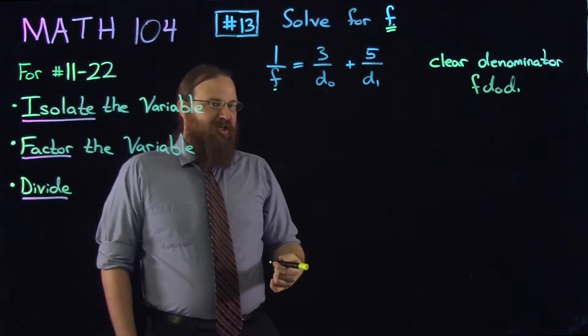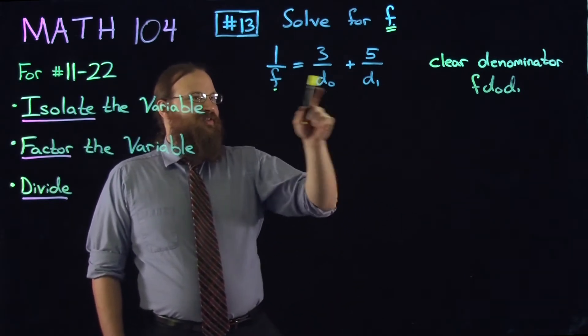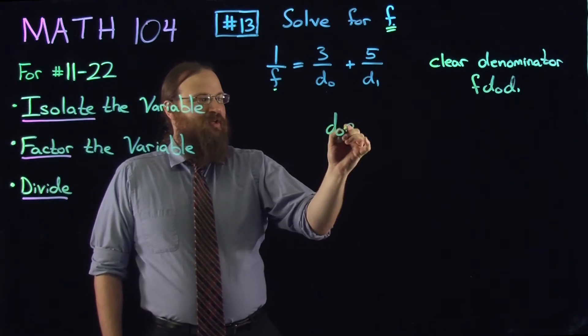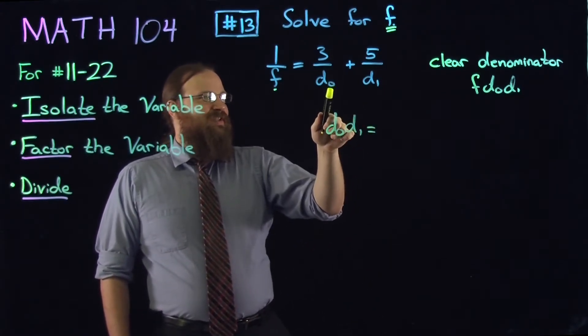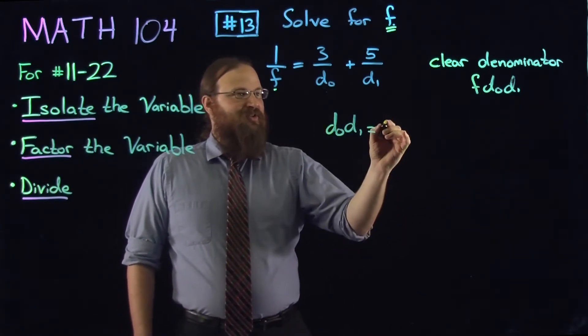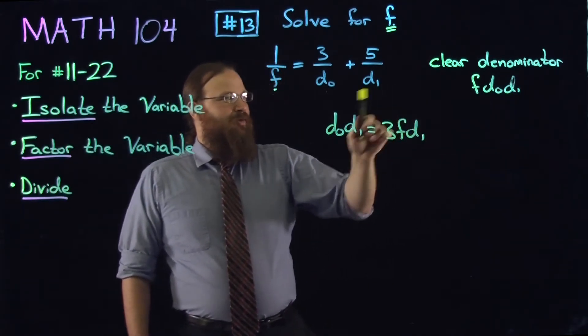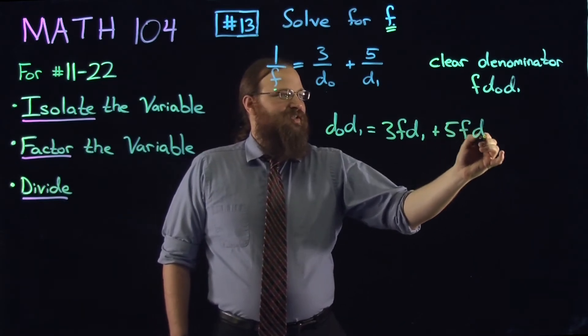And what we'll do is we'll multiply through the entire equation by this expression. So, f times 1 over f, that's going to cancel out, leaving us on the left-hand side with d0, d1. 3 over d0, when d0 and d0 multiply together, we're going to be canceling them out. So we'll have 3f times d1, d1 and d1 will cancel. So that leaves us with 5f, d0.